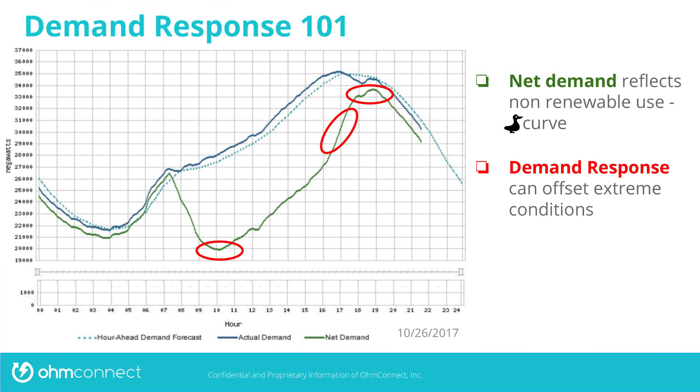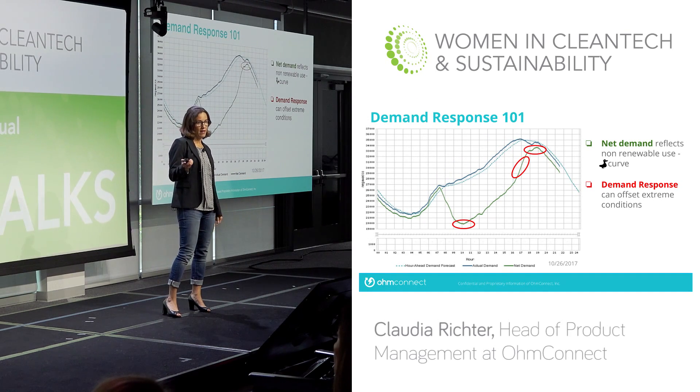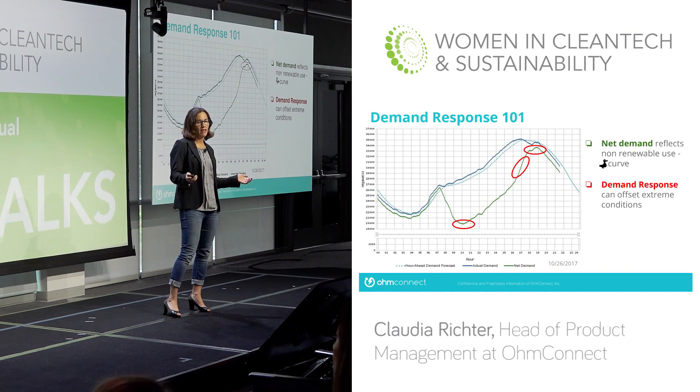Demand response is a tool that you can use on the grid to balance the grid. Traditionally, it's most used for peak demand. You can think about it like the airlines: if a flight is overbooked, the airlines will offer passengers money to take a later flight. Similarly, it's traditionally used within the capacity markets to offer large-scale companies as well as consumers money to agree to not use energy during peak days — sort of like the summer savings and flex alerts.